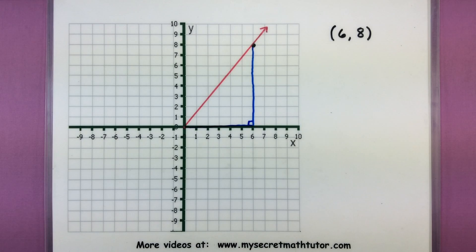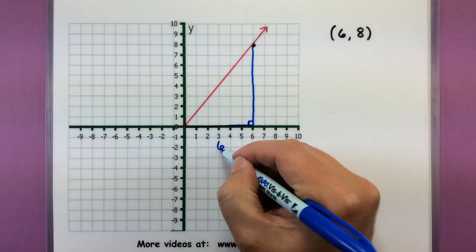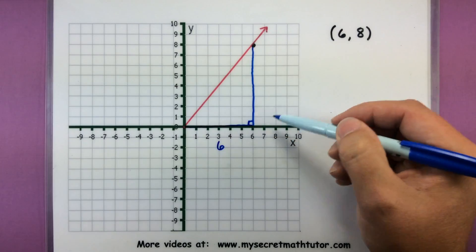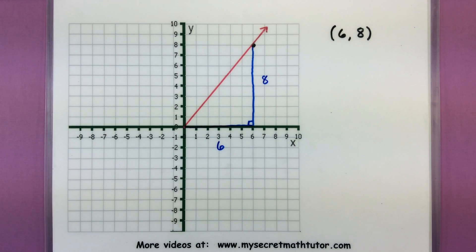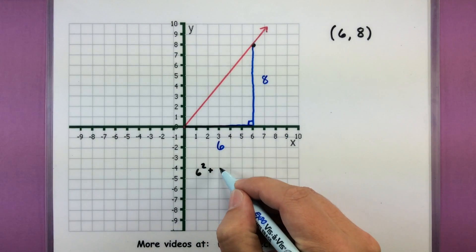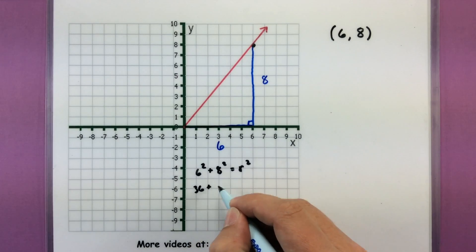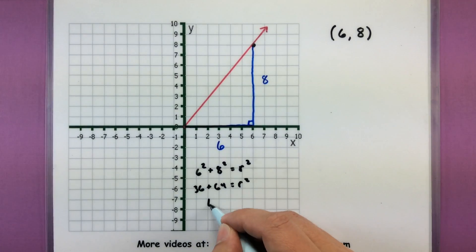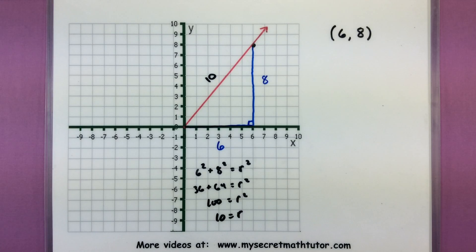With that right triangle we can start identifying some of the sides. The side along the x-axis will be our x-value, so this is six long. Our y-value will be this side, so eight. We need to do a little bit of work to figure out the hypotenuse. The quickest way is to run through the Pythagorean theorem: six squared plus eight squared equals r squared. So 36 plus 64 equals r squared, 100 equals r squared, or r equals 10. Now that we have all the sides of this triangle, we can move on to finding those trigonometric values.